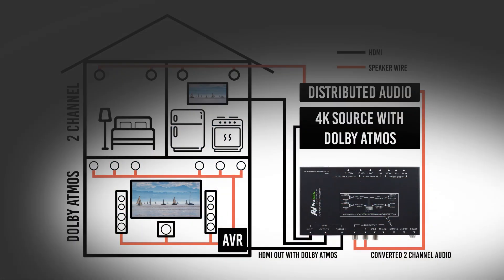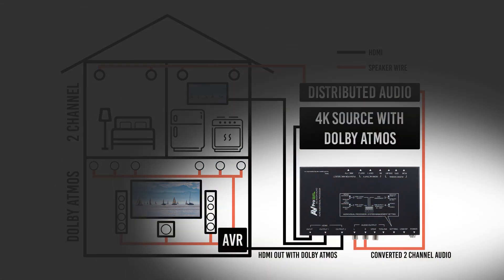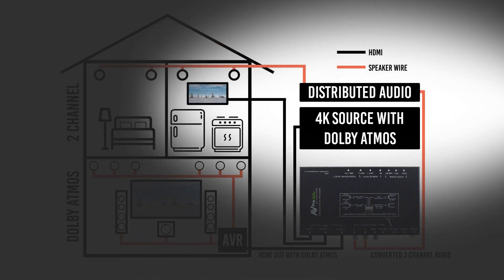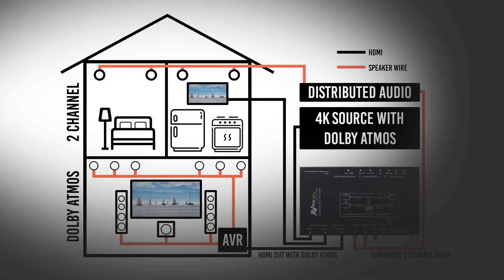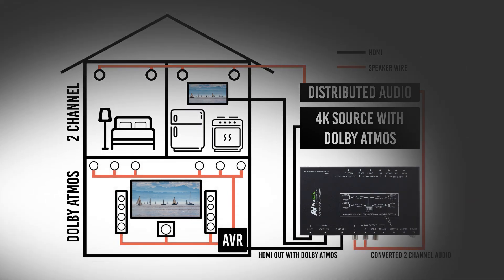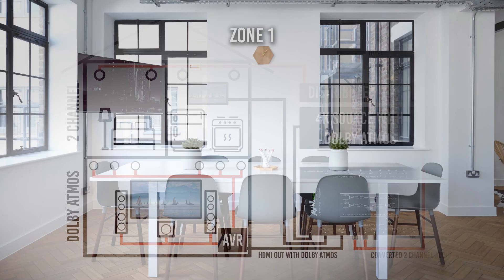Out of the Toslink or two-channel audio ports, we can find our downmixed audio signal ready for a two-channel distributed audio system. The second HDMI port allows you to go directly into another zone or into a local AVR.